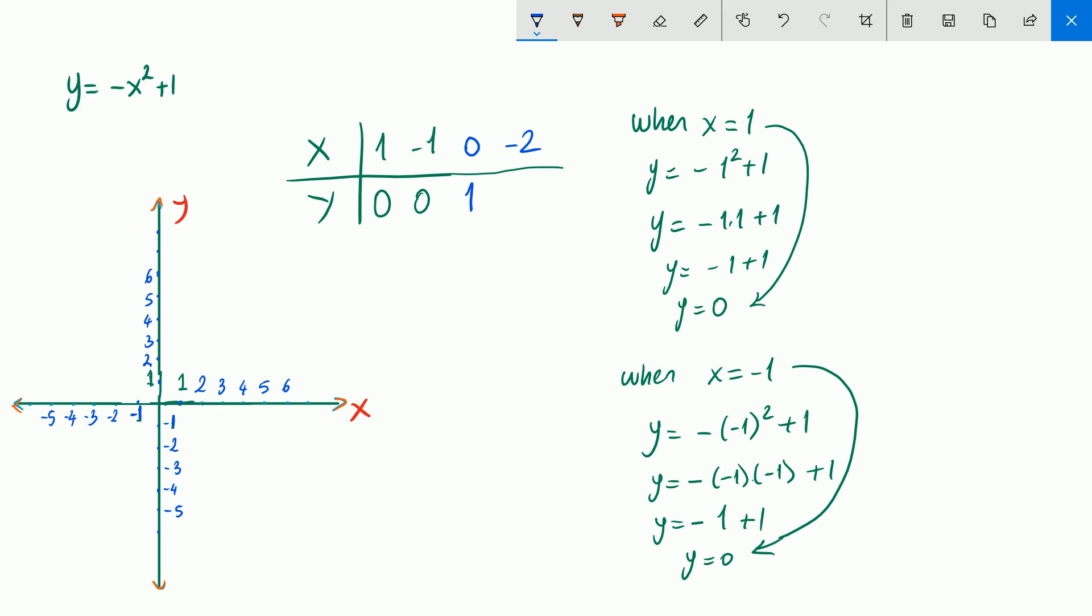When x is negative 2, as I said before, it's a little bit tricky. For negative numbers, you are using parentheses. So negative 2 times negative 2 will be 4, but it has negative sign too. So negative 4 plus 1 will be just negative 3. What about 2? Do it by yourself. 2 becomes negative 3.